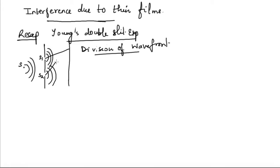These two waves superimpose and give an interference pattern. When the path difference is an integral multiple of lambda, we get constructive interference. When the path difference is an odd multiple of lambda by 2, we get destructive interference.